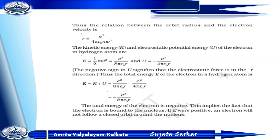We can also find the kinetic energy and the electrostatic potential energy of the electron in the hydrogen atom. The kinetic energy K = ½mv², which gives e² / (8πε₀r). The potential energy equals −e² / (4πε₀r). The total energy is kinetic energy plus potential energy: e² / (8πε₀r) − e² / (4πε₀r) = −e² / (8πε₀r). The total energy of the electron is negative, which implies that the electron is bound to the nucleus.